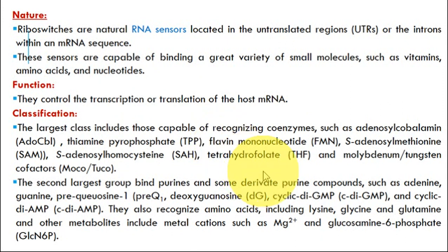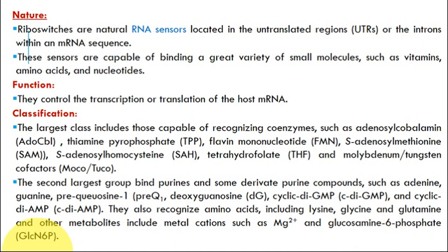The largest class also includes tetrahydrofolate and molybdenum and tungsten cofactors. The second largest group binds to purines or purine derivative compounds such as adenine, guanine, queuosine, and cyclic di-GMP, cyclic di-AMP. They also recognize amino acids, for example lysine, glycine, glutamine, and some metal ions such as magnesium ions, and metabolites like glucosamine-6-phosphate.